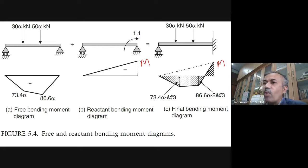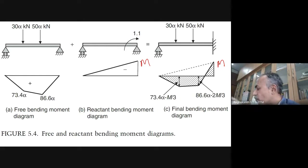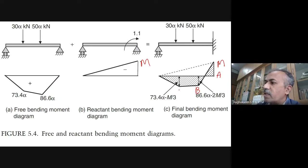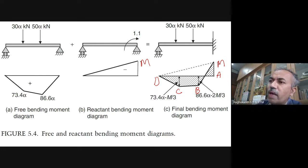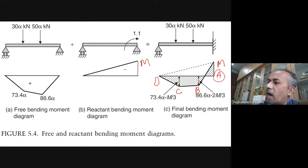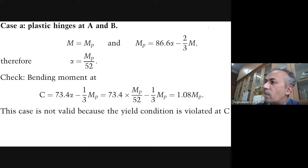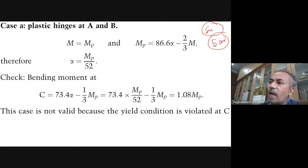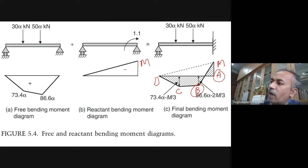A-and-B was wrong because the yield condition was violated at C (bending moment exceeded MP). So we stop here and will continue in tomorrow's class. If there are any questions or doubts, you can ask.